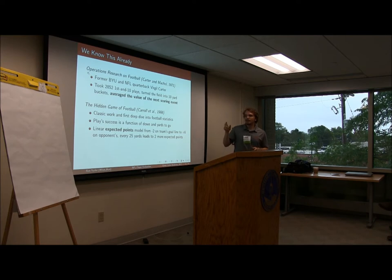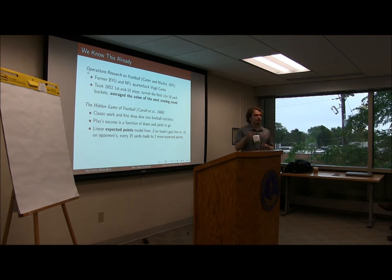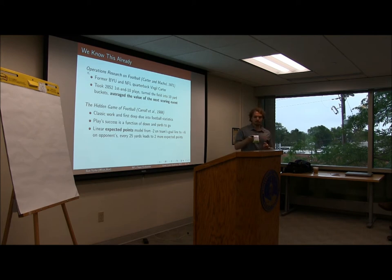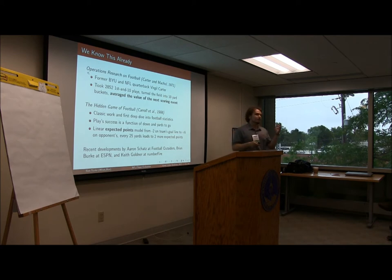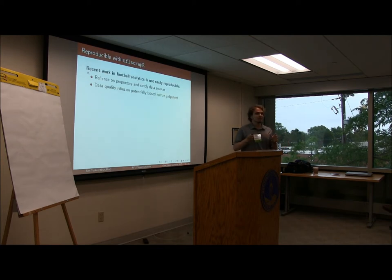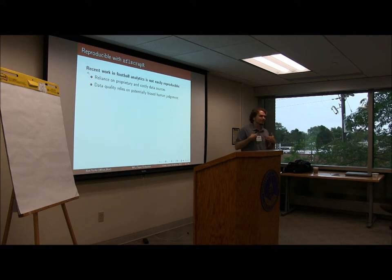Another idea they introduced is that play success is a function of the interaction between down and yards to go. On first and ten, we need at least four yards for a play to be considered a success, because then another four yards on second and six means third and two, and another four means a first down. They introduced this idea of interactions between situation variables. Recent developments by Football Outsiders, Ryan Burke at ESPN, and Numberfire are great novel ideas, but the problem is they're all based on proprietary data — they're not open source. As a first-year stats PhD student without much money, I can't access any of these things, so I want to recreate it on my own.